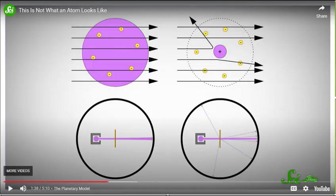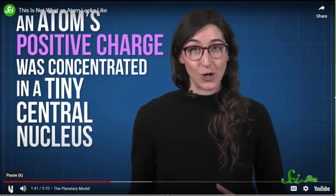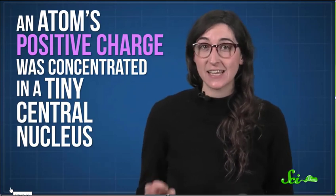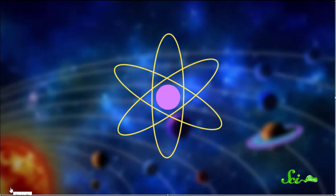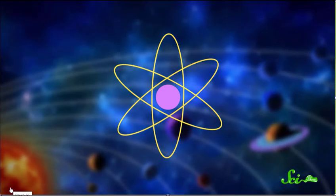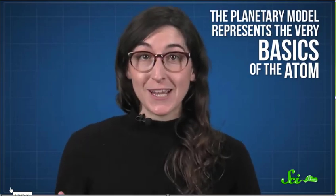This clip will give you a visual about the latest model we've been using — Rutherford's model of the atom. He concluded that an atom's positive charge was concentrated in a tiny central nucleus, and these nuclei were deflecting alpha particles. He also predicted that electrons were orbiting around the nucleus, kind of like how planets orbit the sun. That's why this model is sometimes called the planetary model, and it's still used today to explain the basics of the atom.